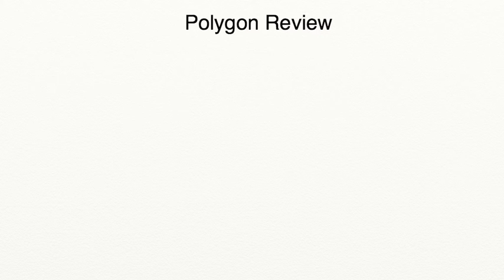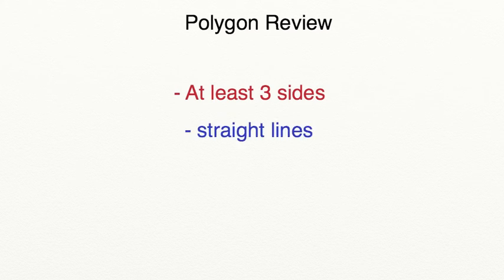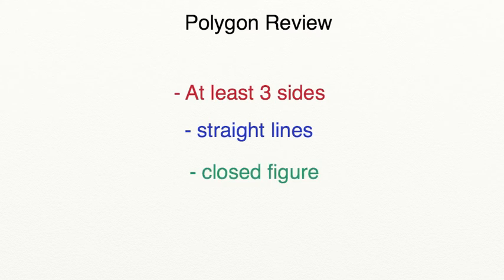We are going to begin today by discussing what you need to have a polygon. If you're trying to find a polygon, you need to make sure that the polygon has at least three sides. You also need to make sure that these three sides are made out of straight lines — the sides cannot curve or turn. And lastly, you need to make sure that all of the sides meet to create a closed figure.